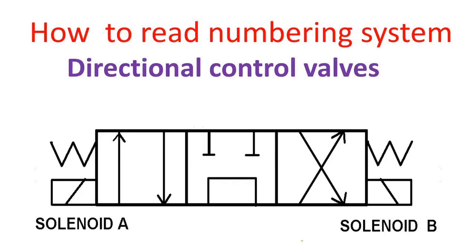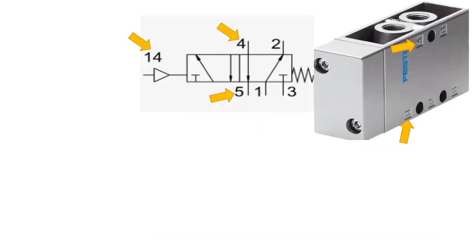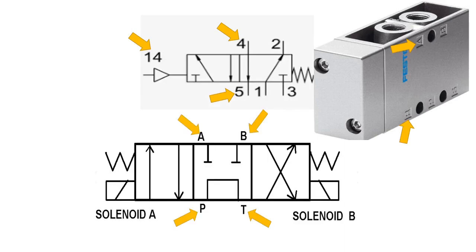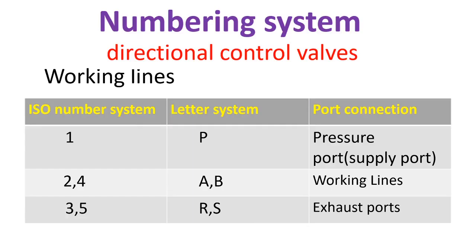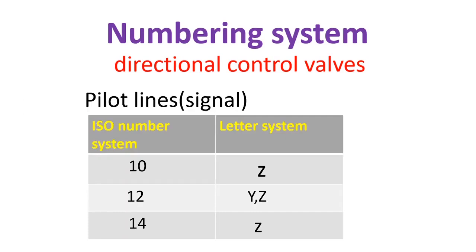The numbering system of directional control valves: number 1 or letter P is the pressure or supply port. Numbers 2 and 4, or letters A and B, are working lines. Numbers 3 and 5, or letters R and S, are exhaust ports. For pilot lines: 10 equals Z, 12 equals Y or Z, and 14 equals Z.